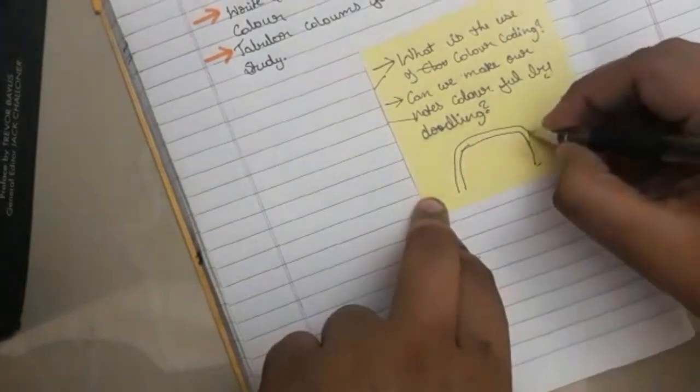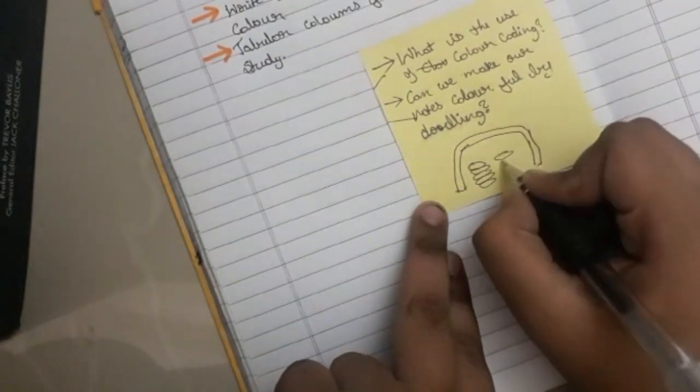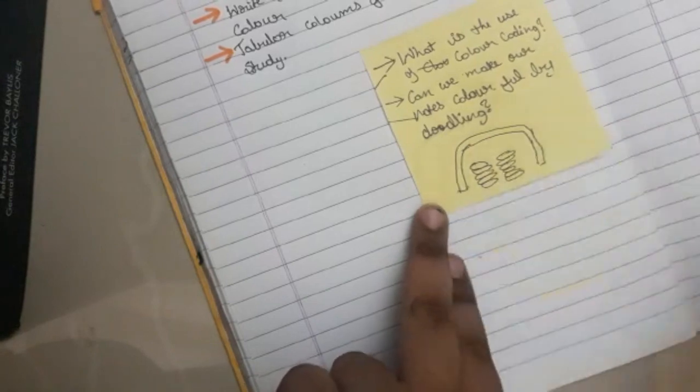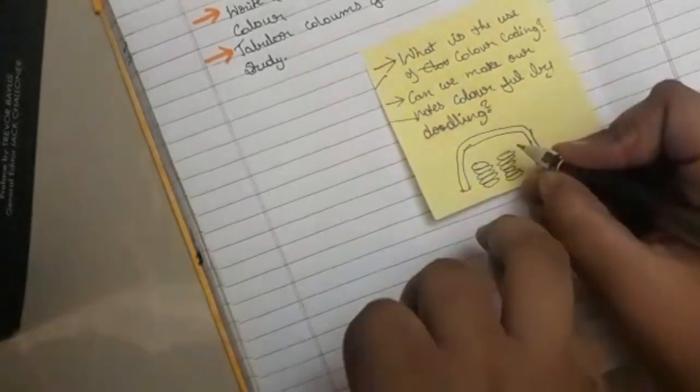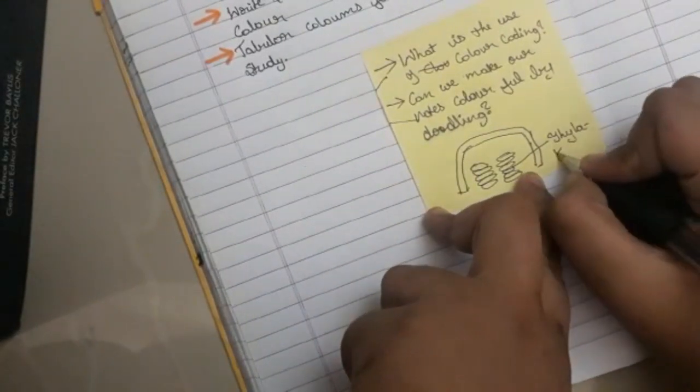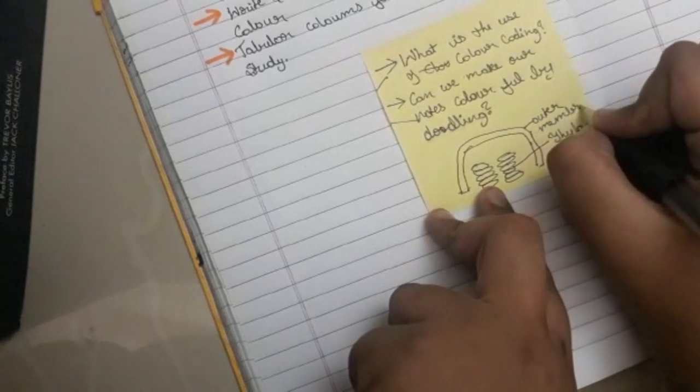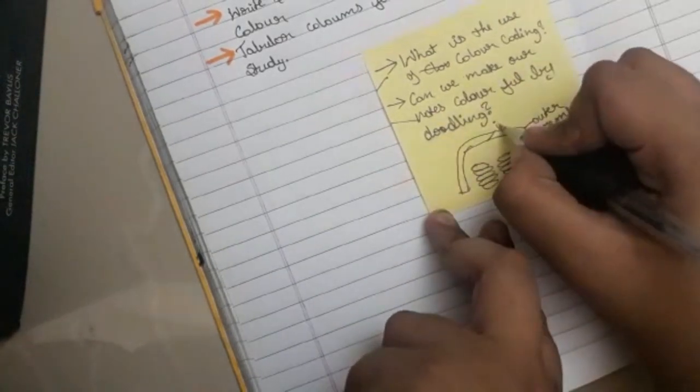Now I'm just drawing it badly for the purpose of the video. But just take some time, draw with pencil, color it, make it look attractive. And label it neatly so that no explanation is required for the particular diagram.